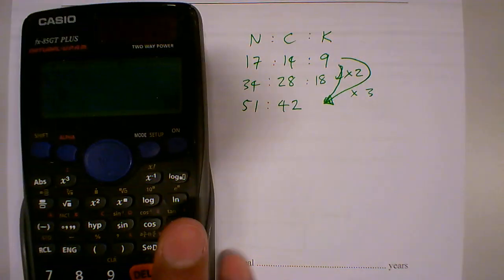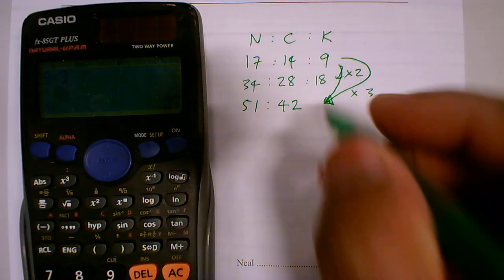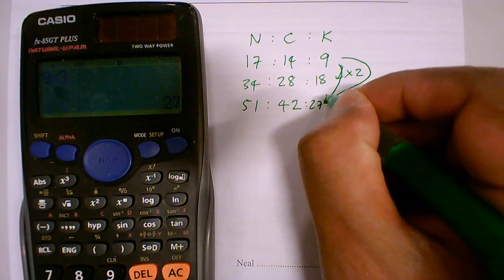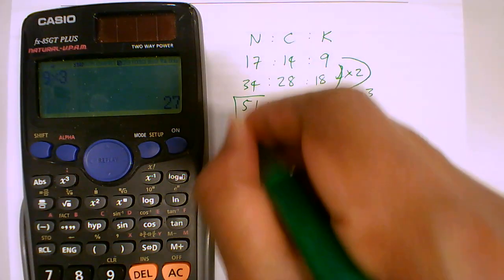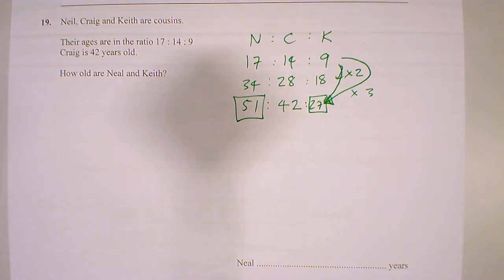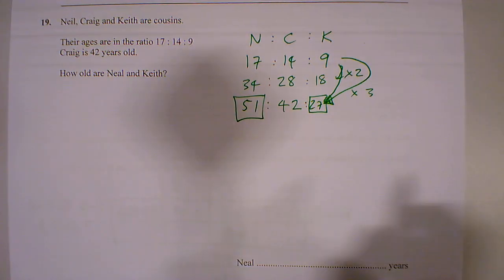And I've got 9 times by 3 gives me 27, so these are the numbers I am looking for. How old are Neil and Keith? So I've got Neil is 51 and Keith is 27.